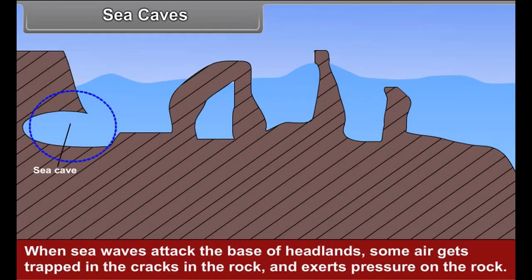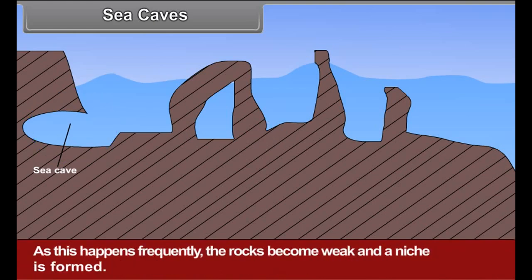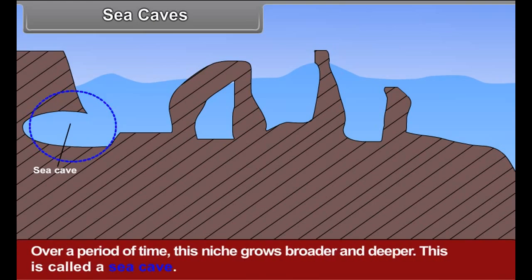Sea Caves: When sea waves attack the base of headlands, some air gets trapped in the cracks in the rock and exerts pressure on the rock. As the wave recedes, the trapped air gets released in an explosive manner, giving rise to tremendous energy. As this happens frequently, the rocks become weak and a niche is formed. Over a period of time, this niche grows broader and deeper. This is called a sea cave.